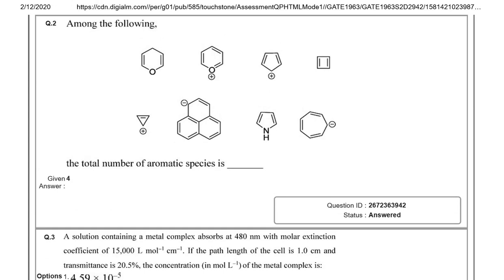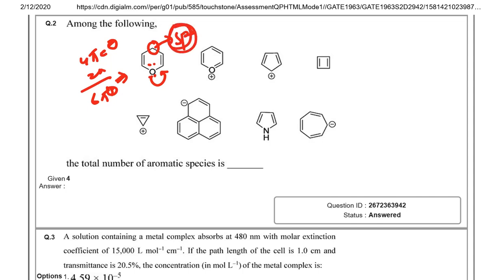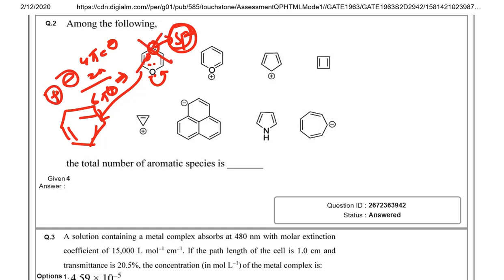The second question asks: among the following, what is the total number of aromatic species? For the first structure — a six-membered ring with one heteroatom oxygen and two double bonds — there are four pi electrons plus a lone pair from oxygen giving six pi electrons potentially, but there is one sp3 carbon. Whenever an sp3 carbon is present in a ring, there is no possibility of delocalization, so it is not aromatic.